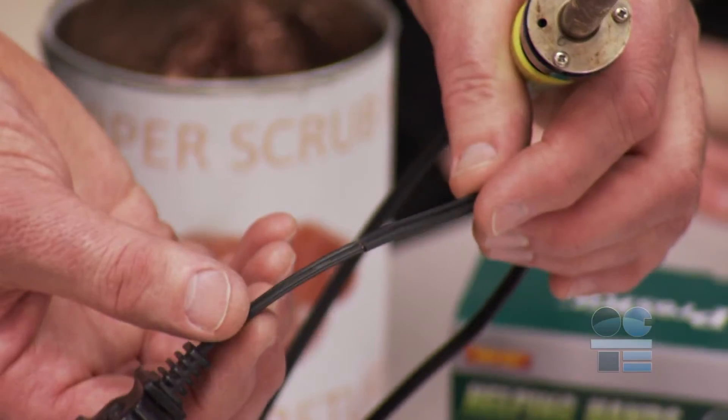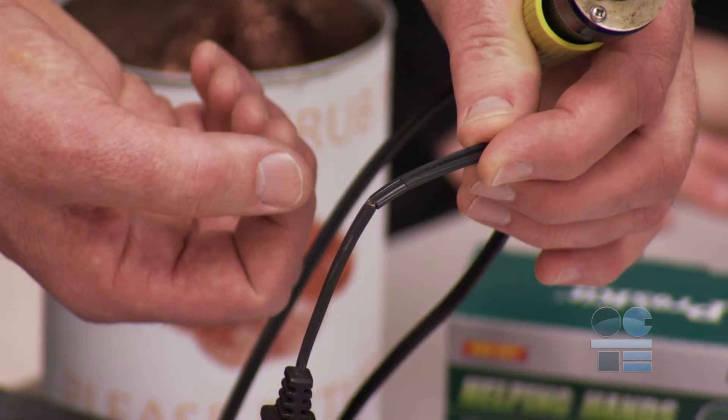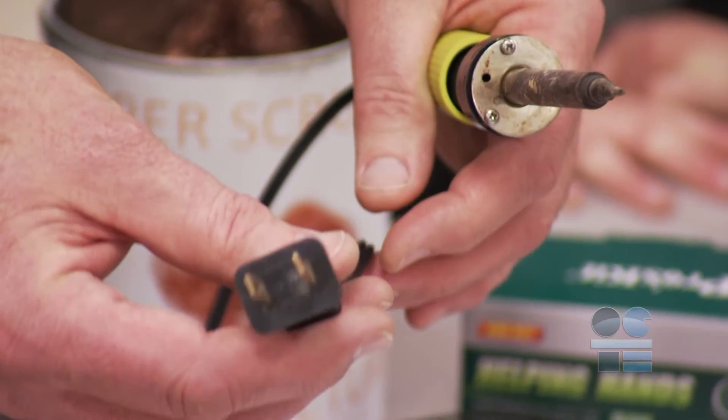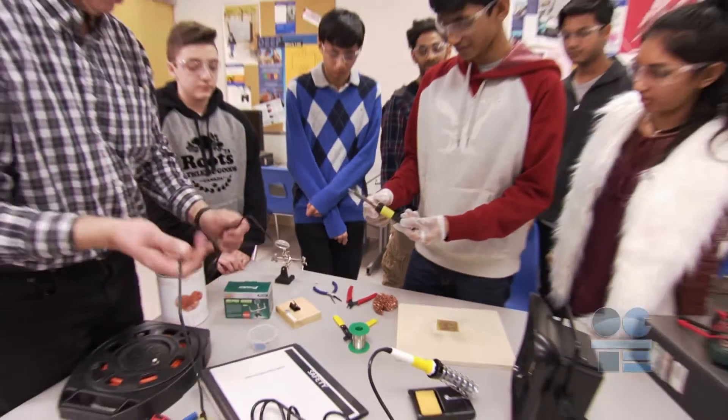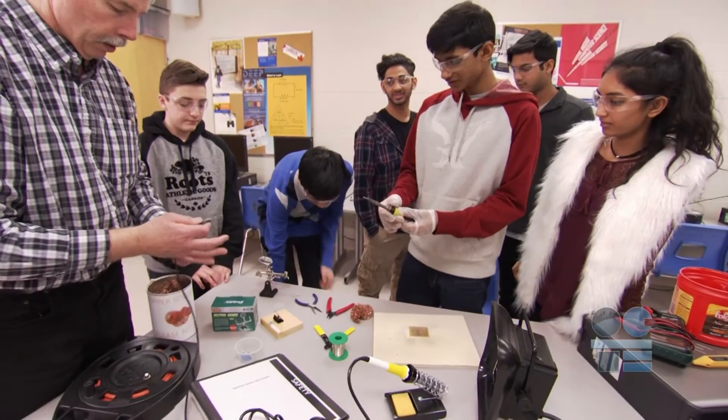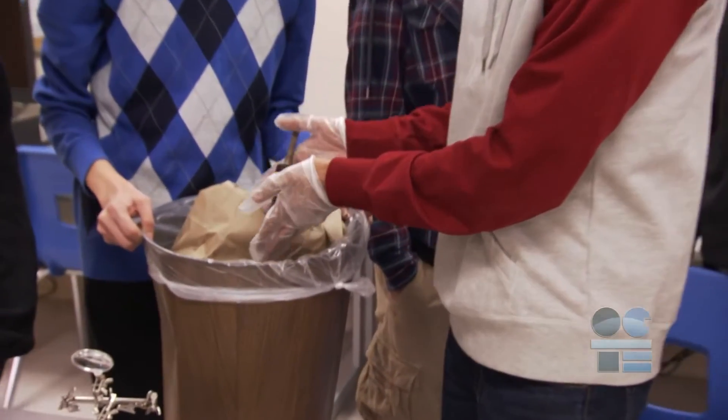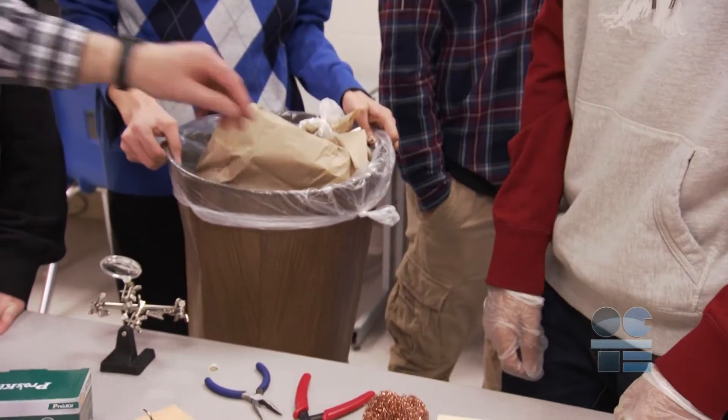We also want to inspect the cord and plug for fraying, splitting, or defective plug. If they are damaged, give the iron to your instructor. There's the risk of an electrical shock or a short causing a fire. The instructor will either repair the iron or throw it out.